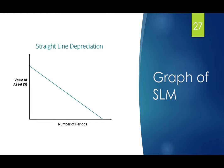When you plot the graph for the straight line method, you get a linear graph that goes to zero. Starting from $500 at year zero, at the end of year 10, the value of the asset reaches zero.